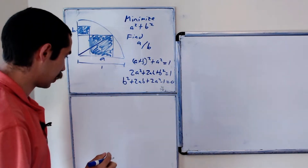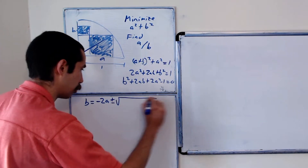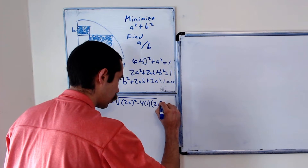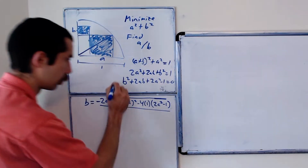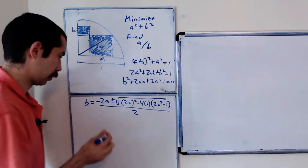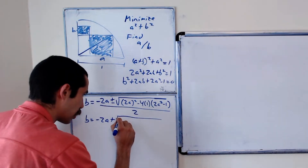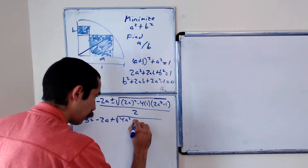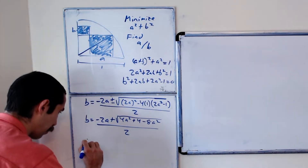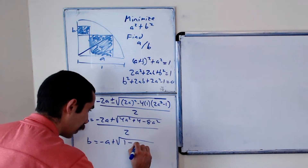Solving for b using the quadratic formula, we get b = (−2a ± √(4a² − 4(2a² − 1))) / 2. We discard the minus branch since b must be non-negative. Simplifying: b = −a + √(1 − a²).